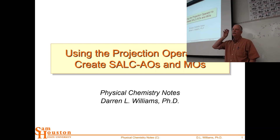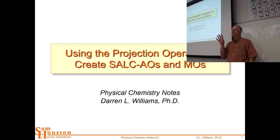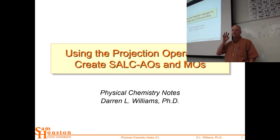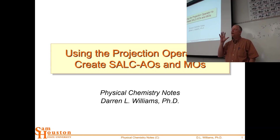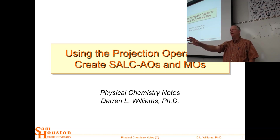Think about what this projection operator is doing. It's like a projector with a light source bouncing off an image element — whether an LCD screen or a digitally deformed mirror — sending it through an imaging element so the image appears on the screen. The character table is our imaging element. We take the atomic orbitals and project them through the character table, and out the other side come symmetry adapted linear combinations — the MO pictures.